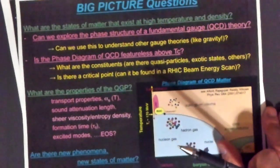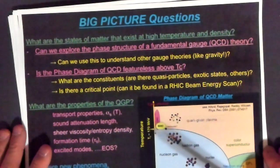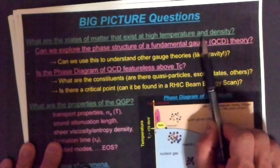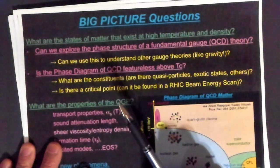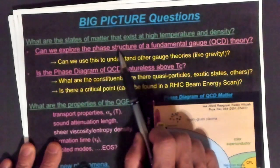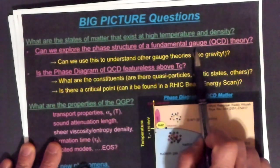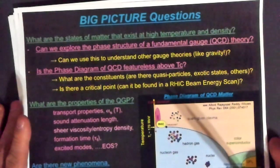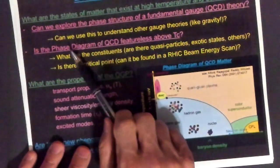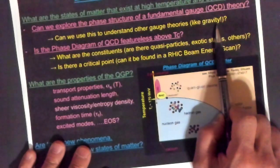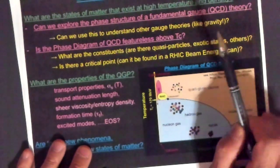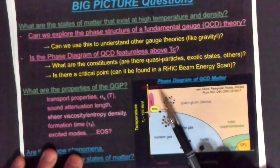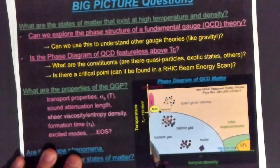What are the big-picture questions we'd like to answer? We want to know what states of matter exist at high temperature and density, and can we explore the phase structure of gauge theory like quantum chromodynamics. Can we use this to understand other gauge theories — for example, gravity?